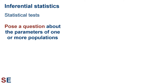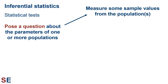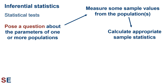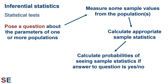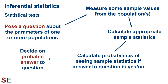The first step is to pose a question about the parameters of one or more populations. If we had all the values for the population or populations, we could answer the question directly. But we don't, so we measure some sample values from the population. From our sample data, we calculate the appropriate sample statistics. Often we want to know if the average sizes are the same, so we would calculate some averages, but there are lots of other types of questions we may be interested in as well. Then we calculate the probabilities of seeing our sample statistics if the answer to our original question is yes or no. Then, based on these probabilities, we make a decision about the probable answer to our original questions about the population or populations.